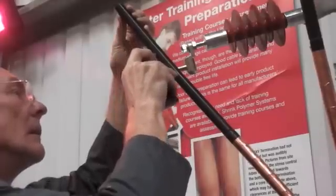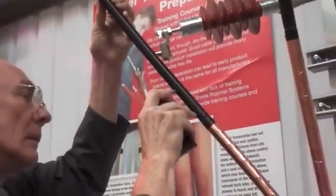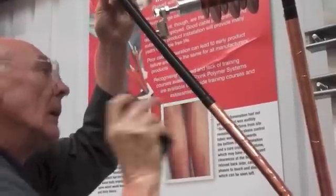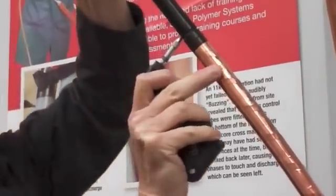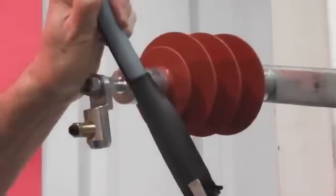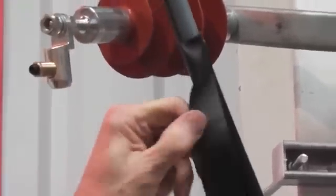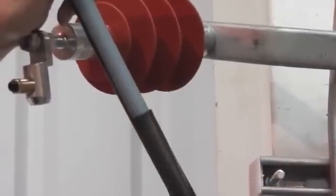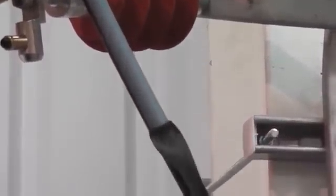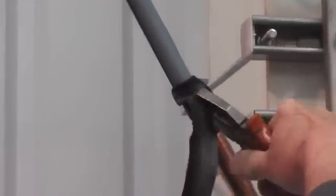Now using a scoring tool set to a particular depth, score longitudinally down the core to that prepared screen end. The semi-conductive layer should peel away nice and cleanly as shown. There's no need to use glass at this stage. Some simple tools like a round file and a scoring tool are all that you need.